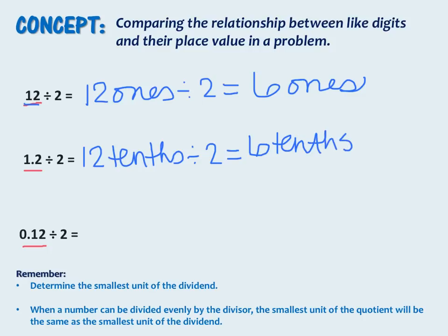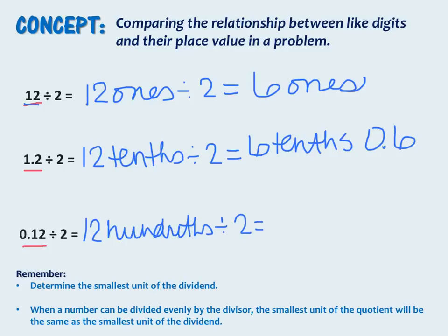Like the first, 12 divided by 2 is 6, but this time our smallest unit is tenths, so our quotient is 6 tenths. And the third is 12 hundredths divided by 2. Our unit form is hundredths — 12 hundredths divided by 2 is again 6, but this is 6 hundredths.